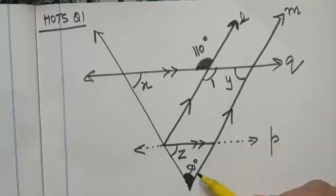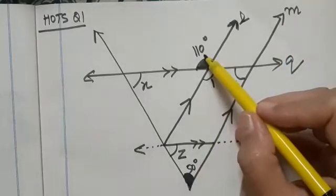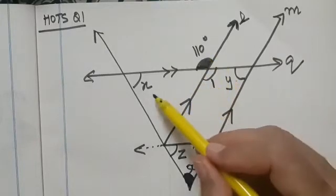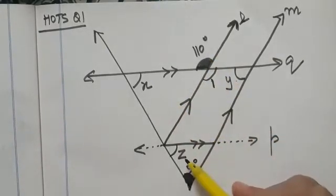This angle is given to be 50 degrees and this angle is 110 degrees, and we have to find the value of X, Y, and Z. So let us see how we can solve this question.